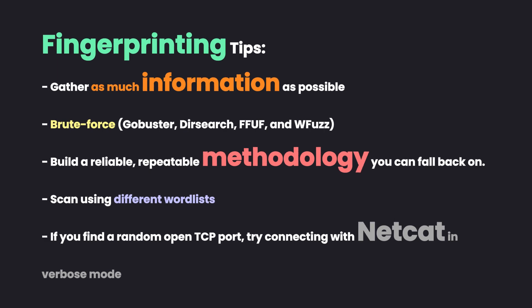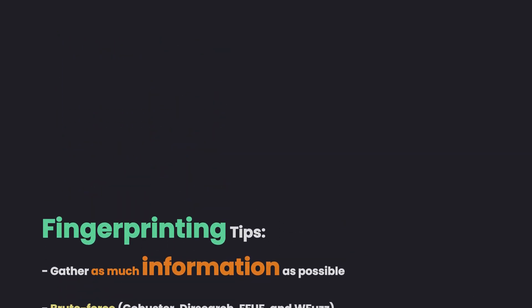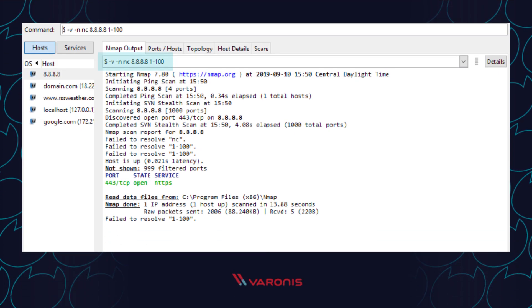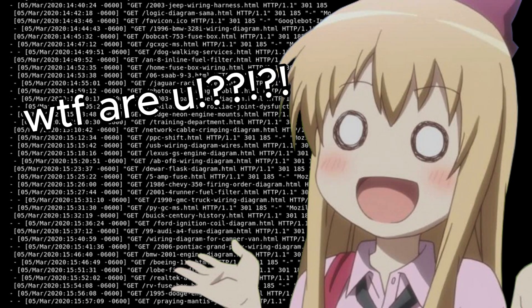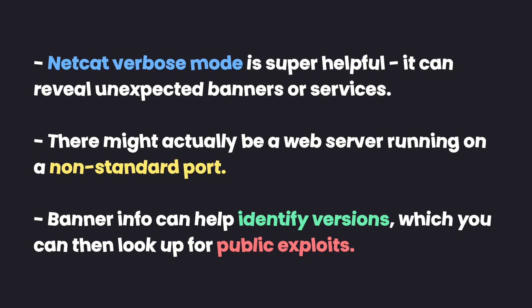I also highly recommend that if there's a random TCP port you haven't seen before, use netcat on it with verbose mode and see if it spits out any useful information. Maybe it was actually a web server on a really random port that didn't feel like a web server because of the port number, or maybe it spits out more information about the server version so you can now look up specific exploits.